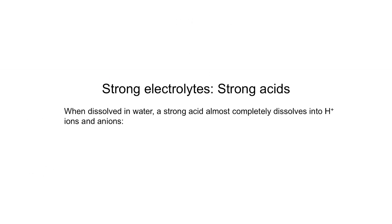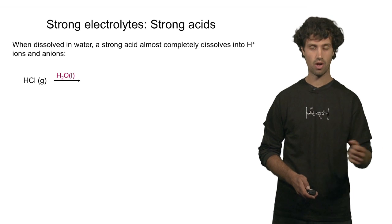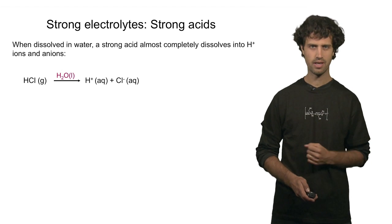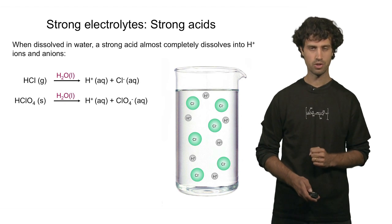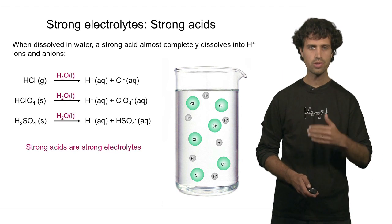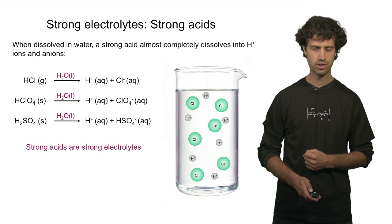Strong acids are also strong electrolytes. A strong acid is an acid that, when dissolved in water, fully dissociates into protons and anions. Hydrochloric acid is an example — when dissolved in water, it dissociates into protons and chlorine anions. Another example is perchloric acid, which fully dissolves into protons and perchlorate anions, or sulfuric acid, which also fully dissociates into ions. Because a lot of ions are produced in solution, strong acids are strong electrolytes.